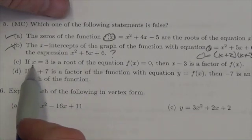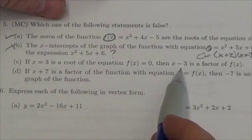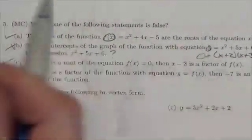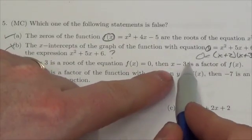It says if x equals 3 is the root of the equation f of x equals 0, then x minus 3 is a factor. Well yeah, that's true. We've been doing that over and over again. If I ever get x minus 3 as a factor, I set that equal to 0 and solve for x.